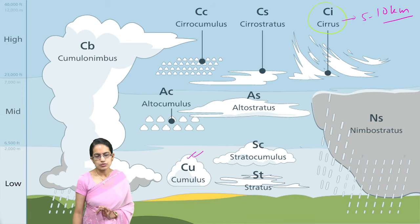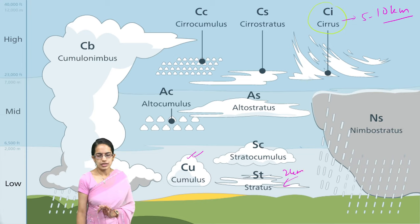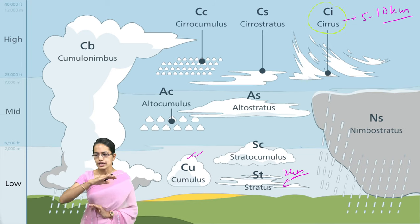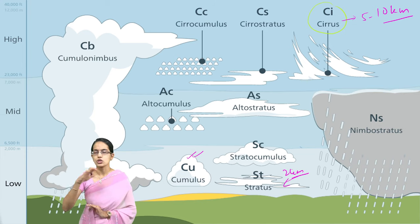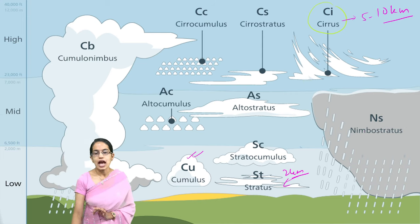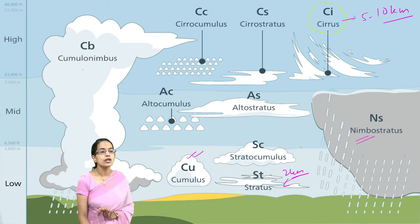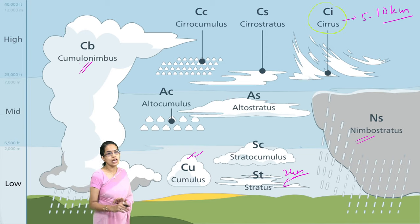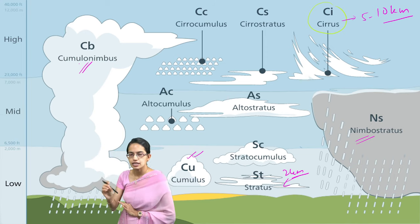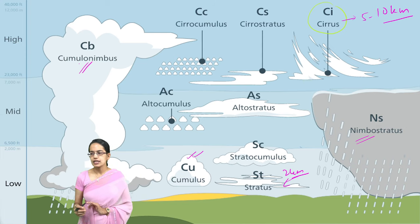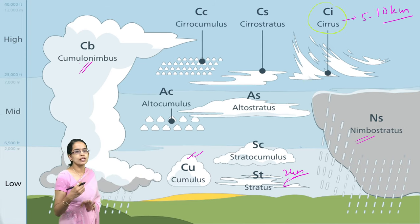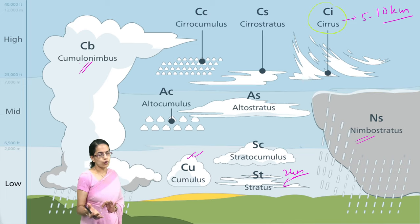Stratus clouds are the lowest clouds, usually found up to 2 kilometers in height. They appear like straight lines or sheets in the sky and are usually grey and dull in colour. Then we have nimbus clouds — either nimbostratus or cumulonimbus. Both are responsible for rainfall. Nimbus clouds are the real rain clouds, usually dark in colour and responsible for continuous rainfall.